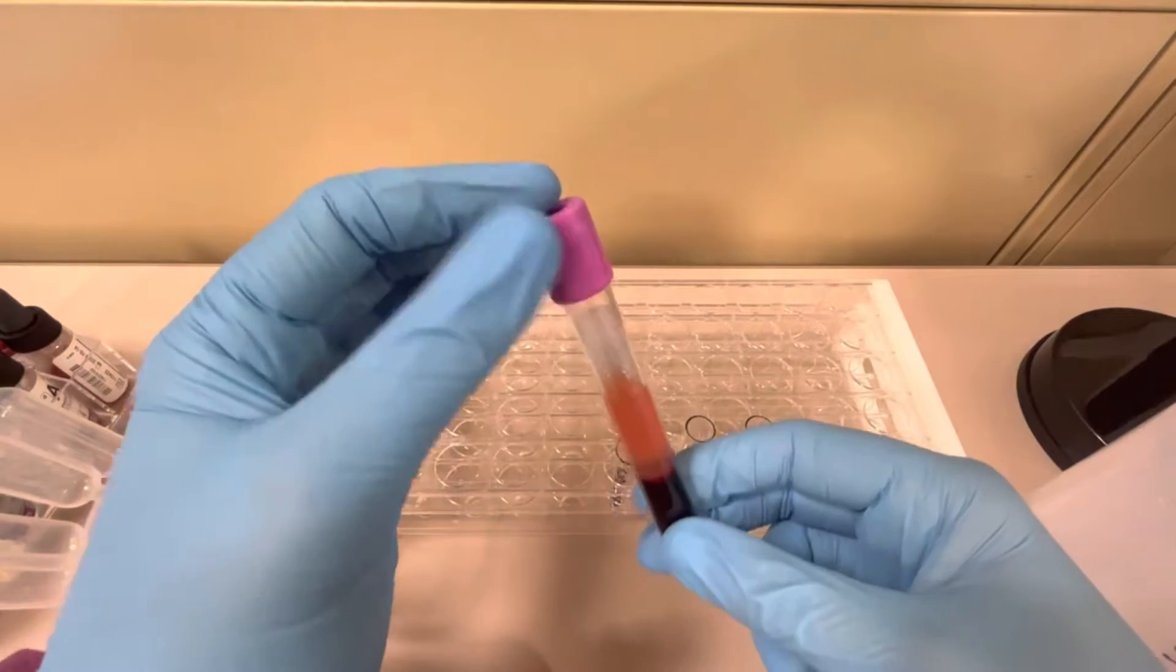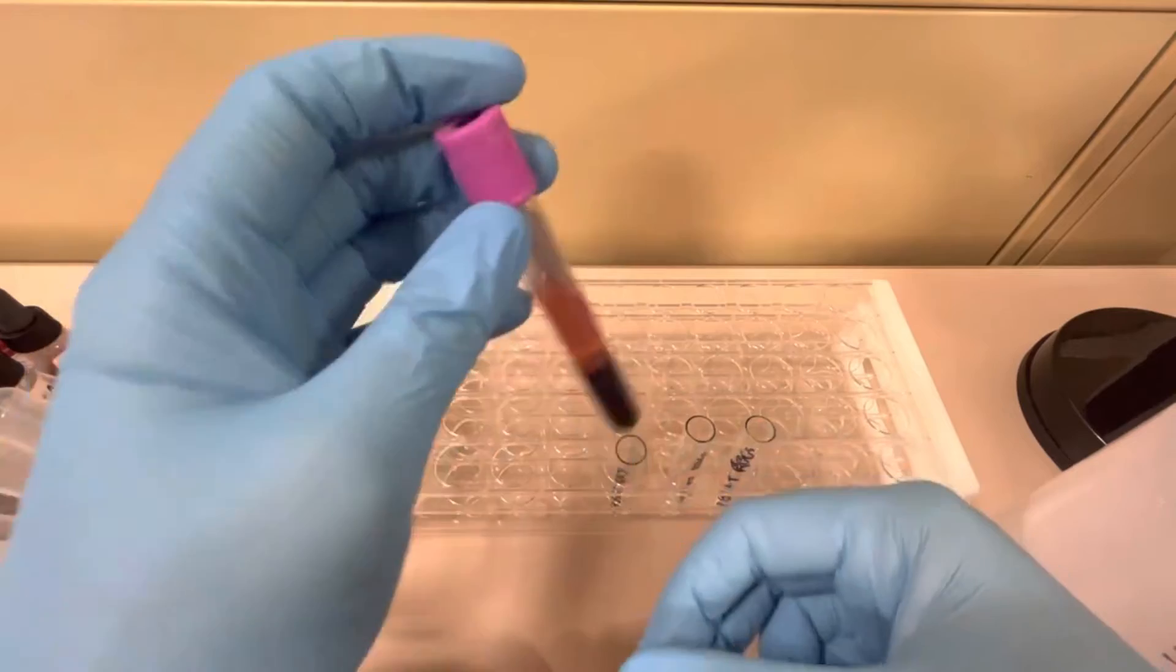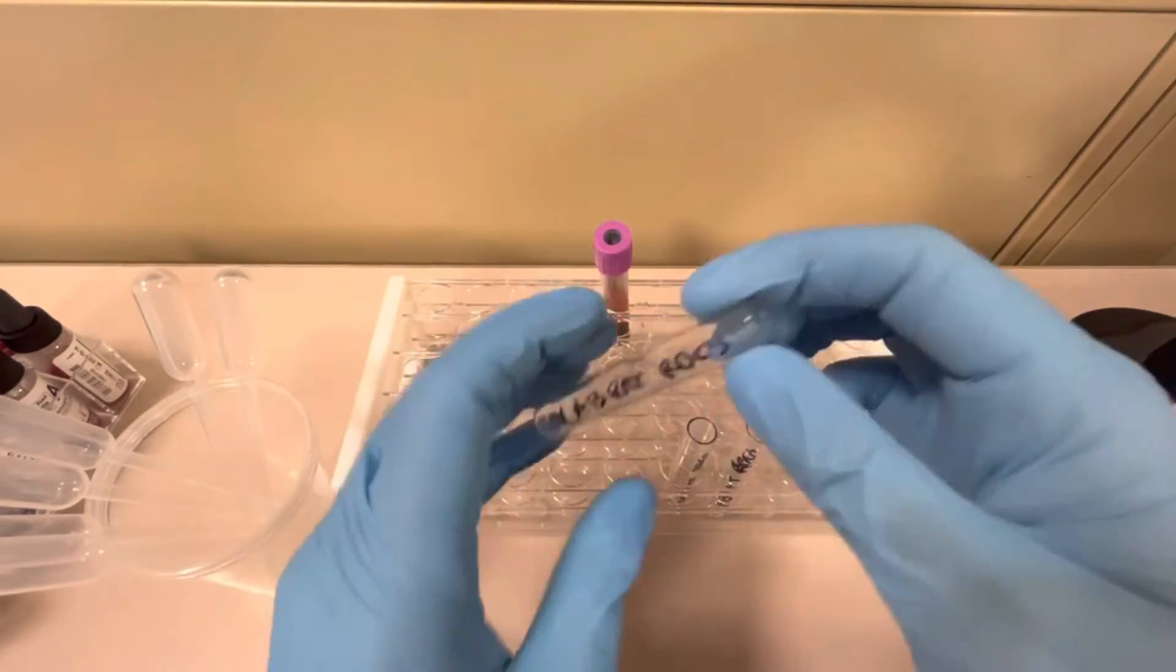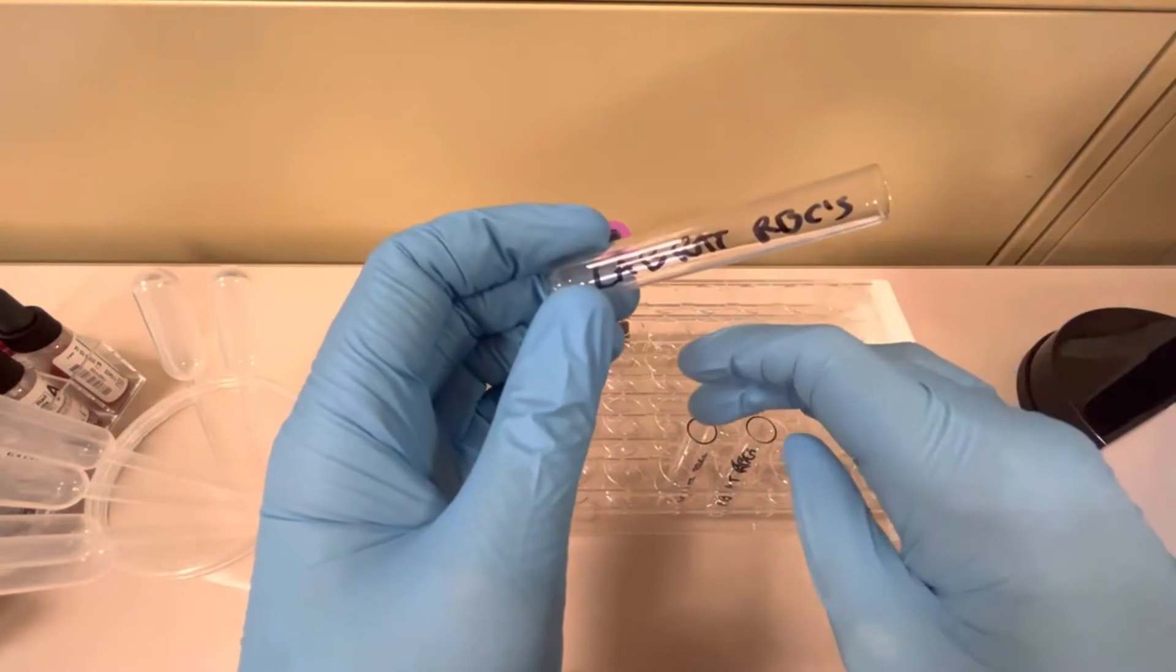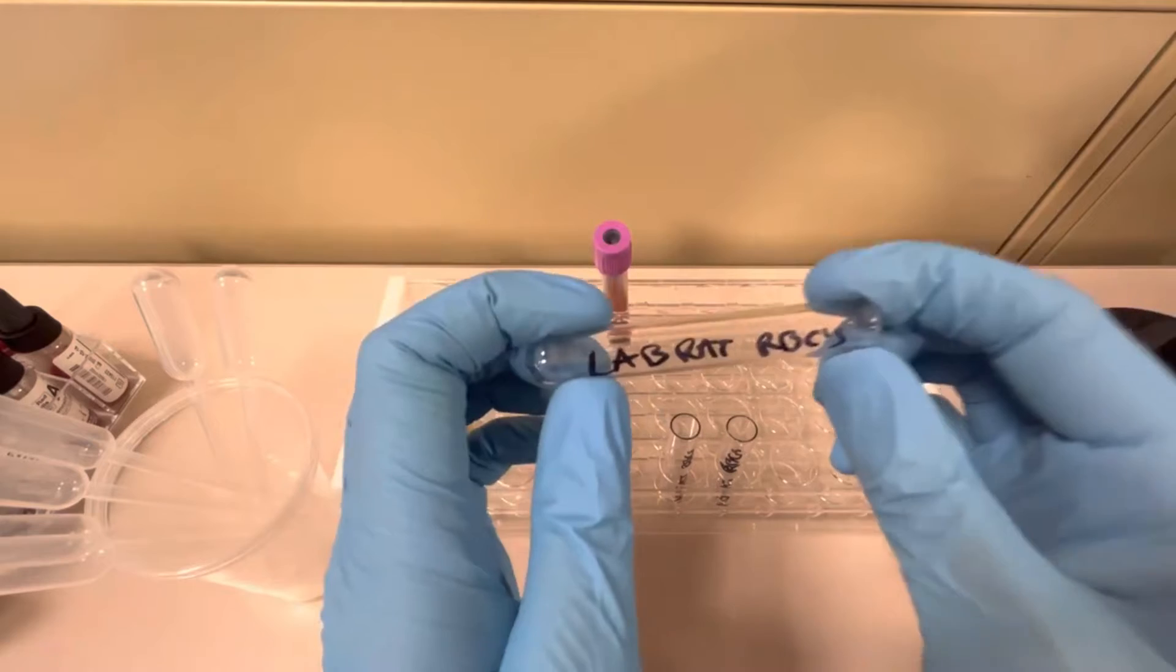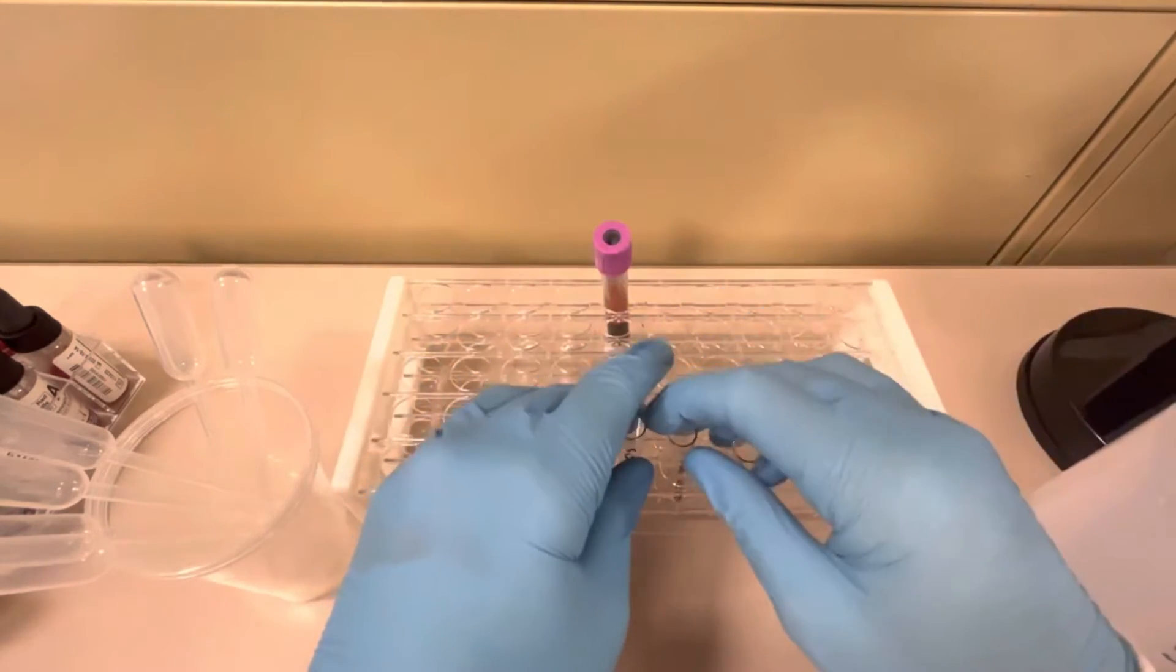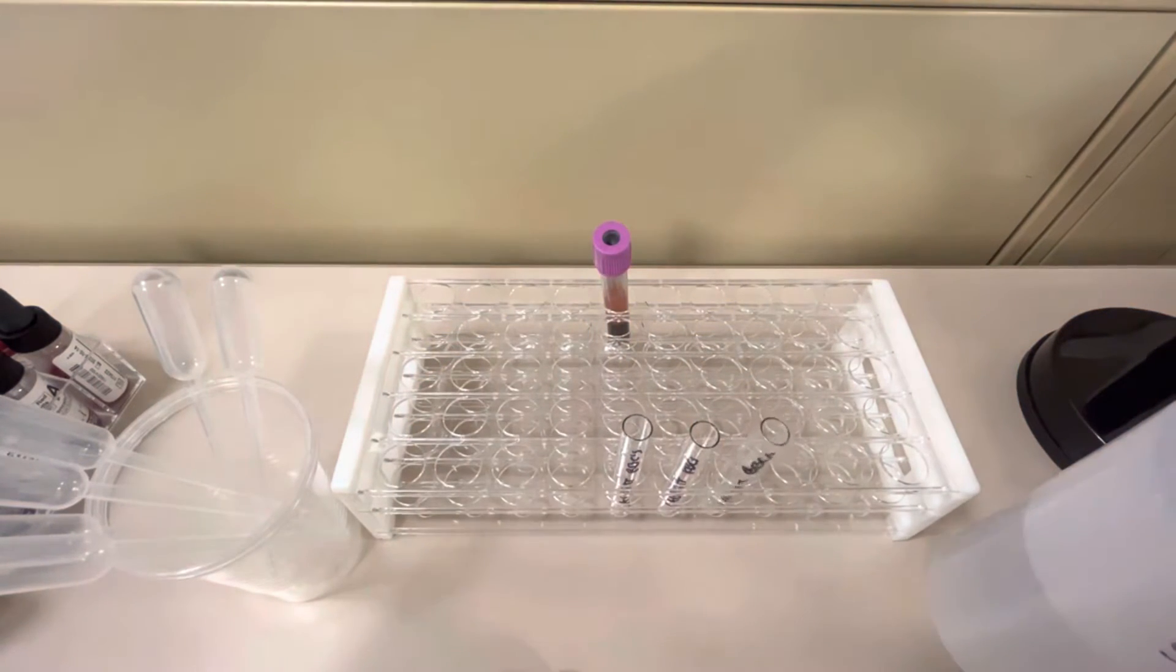It's in a correct tube so you can use an EDTA specimen, either lavender top or pink top for this. So we have a properly labeled specimen. Now we also have some glass tubes. Technically you only really need one, but I'm going to show you what happens if you put too many red blood cells in or too few red blood cells in and then of course the correct one. So this one is labeled Lab Rat and then I just put RBCs on it. I have disposable pipettes, my blood bank saline, and I'm ready to go.